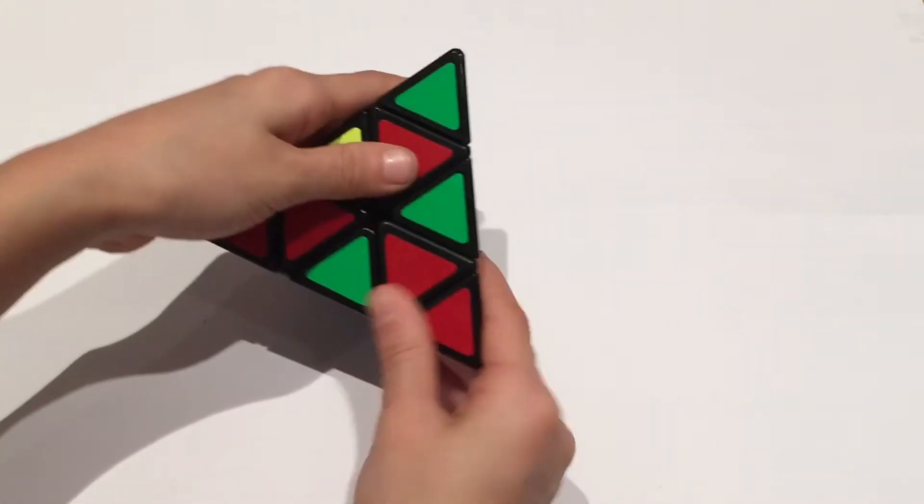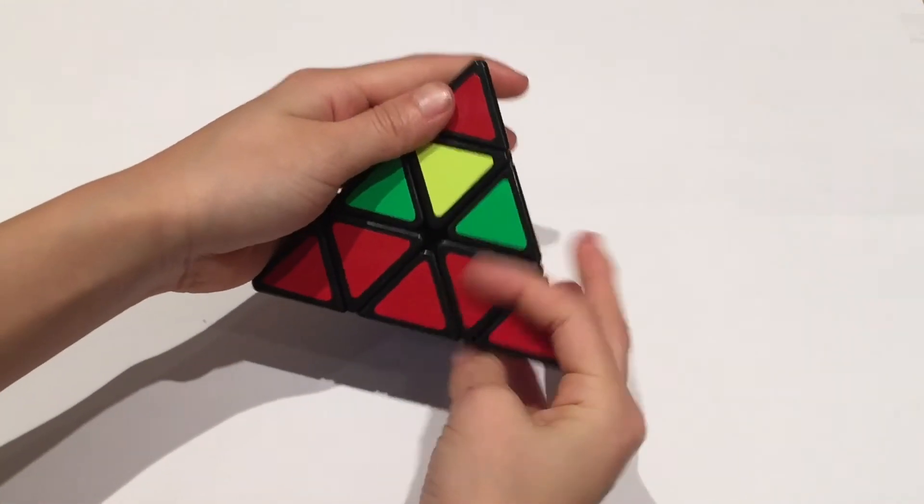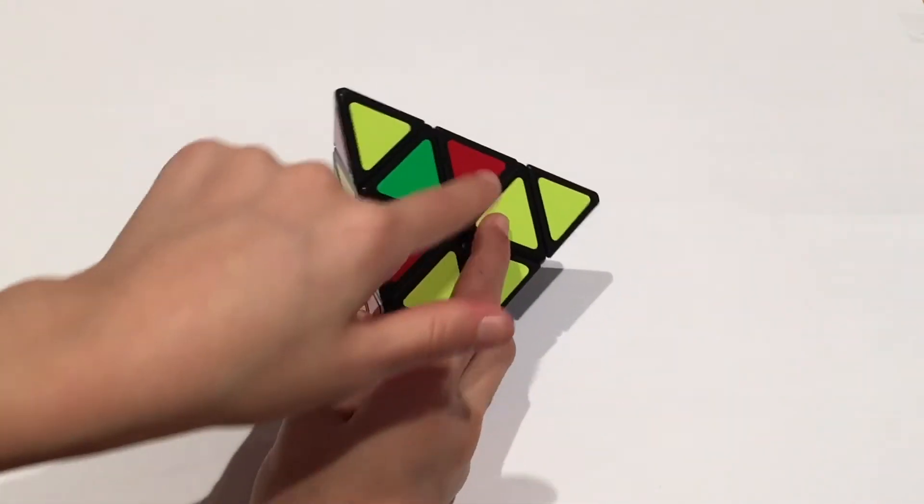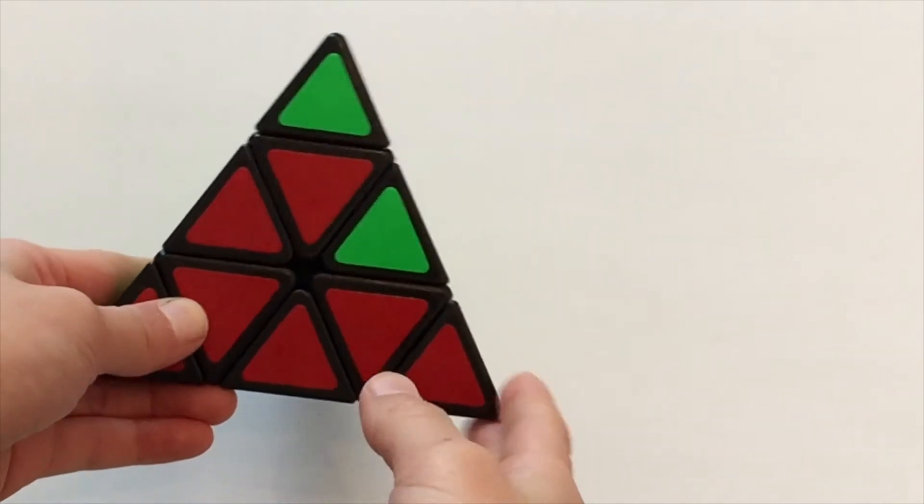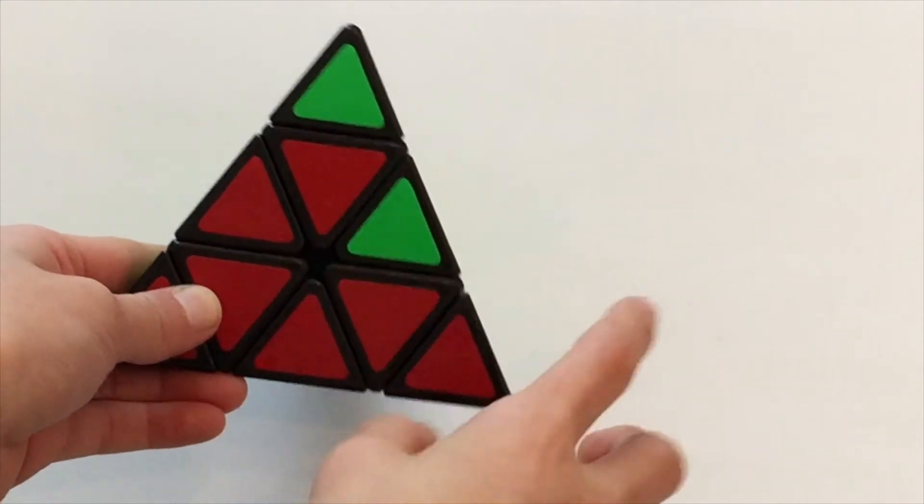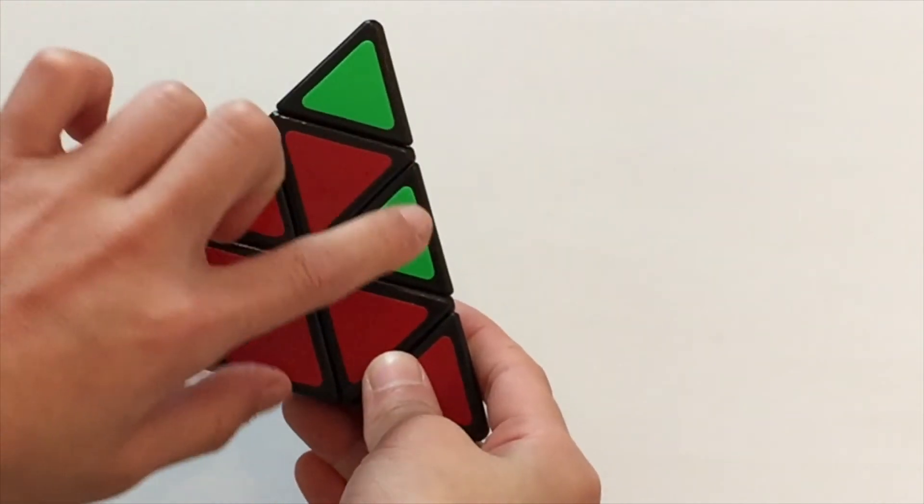Now we brought this blue edge out so we just insert it in like we did before. So we twist this out of the way, bring this up and then insert it in. Now you should have these so that the edges are making headlights.